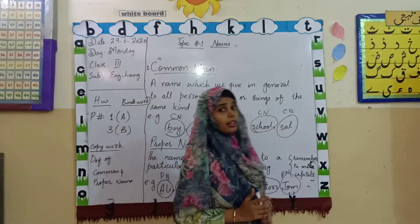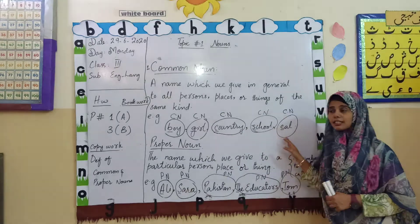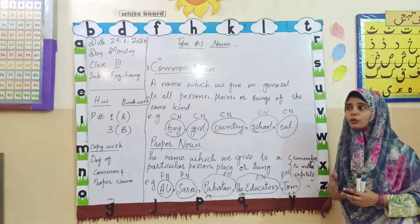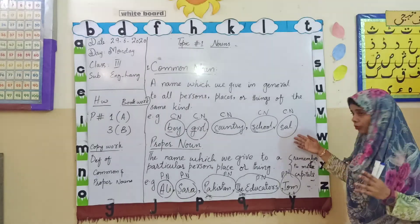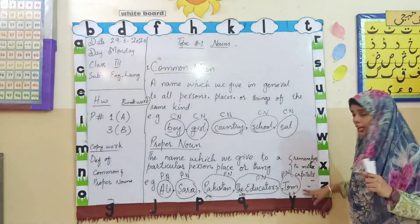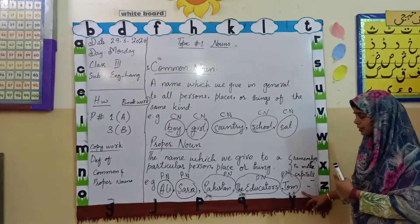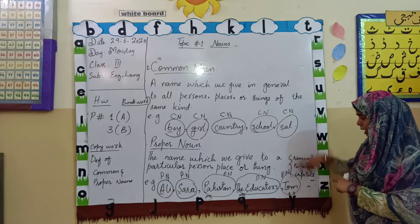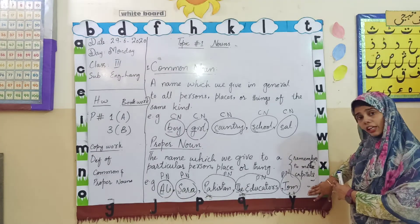If I talk about the last example — animal. This is an animal: cat. There are many pets at your home; mostly we have cat as a pet. It is very good to have a name. I have written here Tom, because it's the name of a cat. Tom is the proper name of a cat, so it is a proper noun.